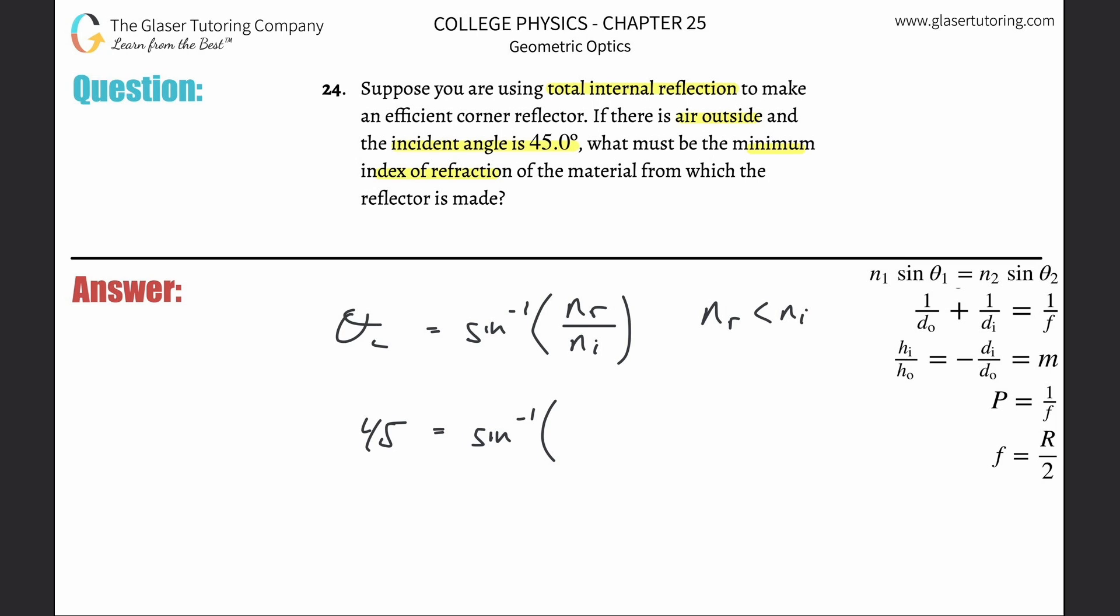They're talking about air being outside. Air has basically the lowest index of refraction except for vacuum, very close to one. But they're asking me for the incident angle, so that's what I'm solving for here: n sub i.